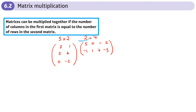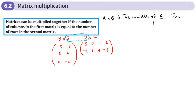The first thing to know is that we can only multiply matrices where these two numbers are the same — the width of the first matrix needs to equal the height of the second matrix. So if we're doing A times B, the width of A must equal the height of B.